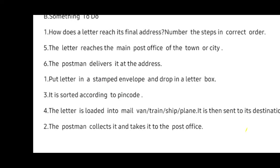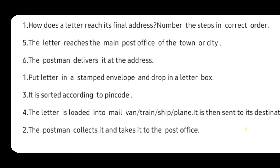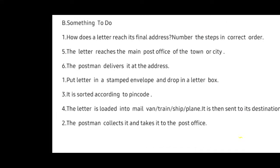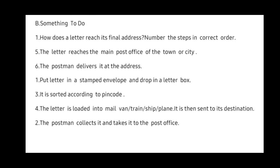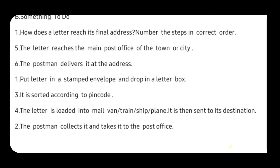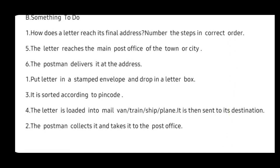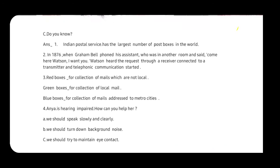Number two: the postman collects it and takes it to the post office. Number three: it is sorted according to the PIN code. Number four: the letter is loaded into a mail van, train, ship, or plane and sent to its destination. Number five: the letter reaches the main post office of the town or city. Number six: the postman delivers it at the address. The 'Something To Do' section is now finished.